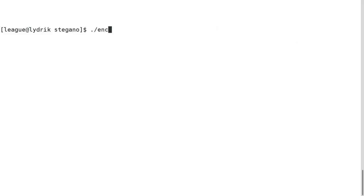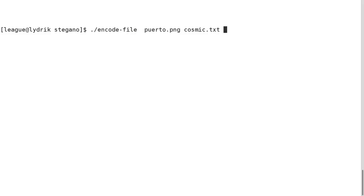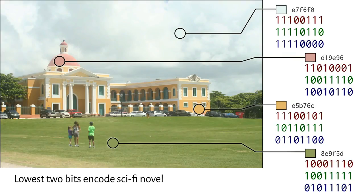I wrote a simple program to do this. It takes an input image, your secret message file—I've downloaded an out-of-copyright sci-fi novel—and a file name for the output image. Here is the result, but on the surface it looks just like all the others.